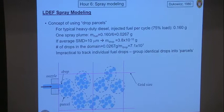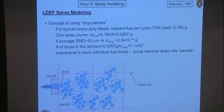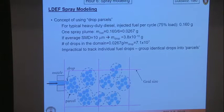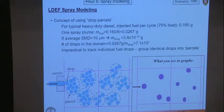His idea is: instead of tracking every single droplet, group them together into parcels where each parcel contains drops of the same size, velocity, and temperature. It then appears as one parameter to track. For example, if you inject 160 milligrams of fuel with a typical drop size of 10 microns, you get 70 million drops participating in that injection.